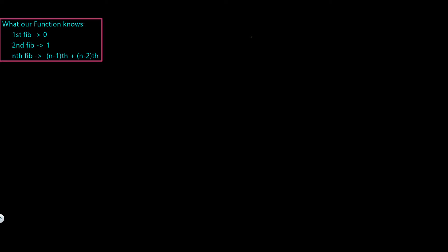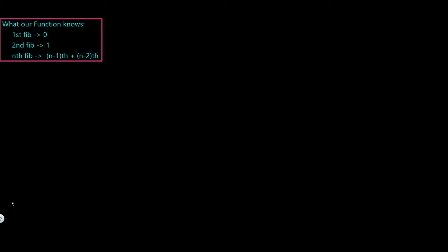Now let's see how our function can evaluate the nth Fibonacci number. Our function must have some basic information: it knows that the first Fibonacci number is 0, the second is 1, and that fib(n) = fib(n-1) + fib(n-2).